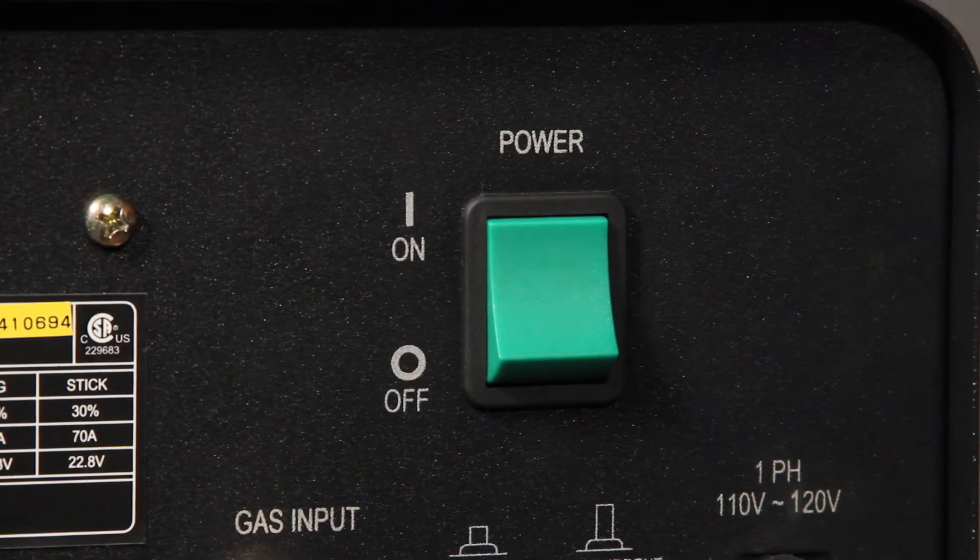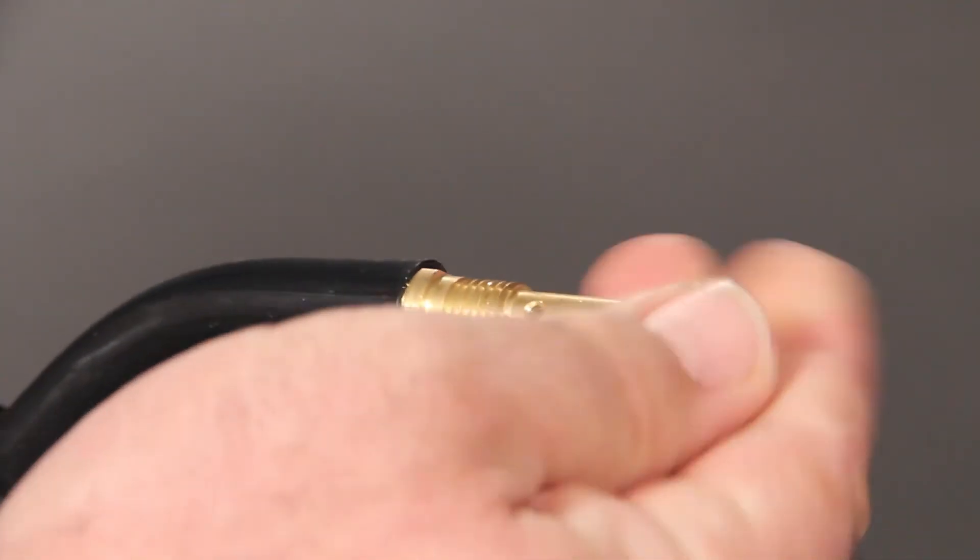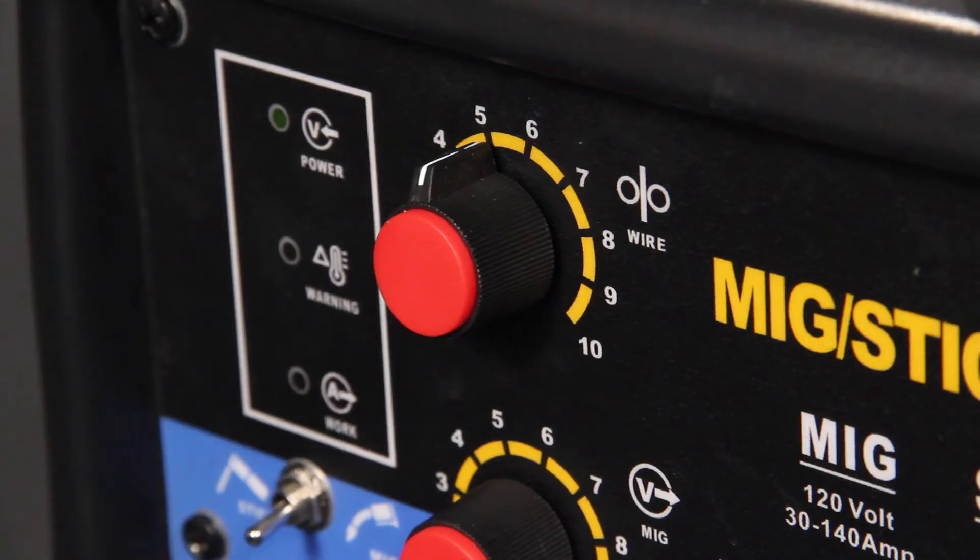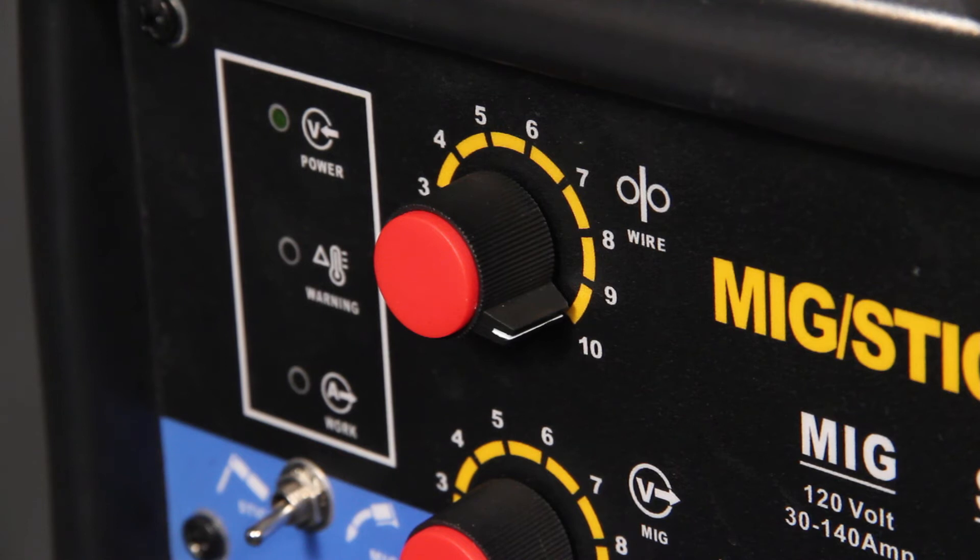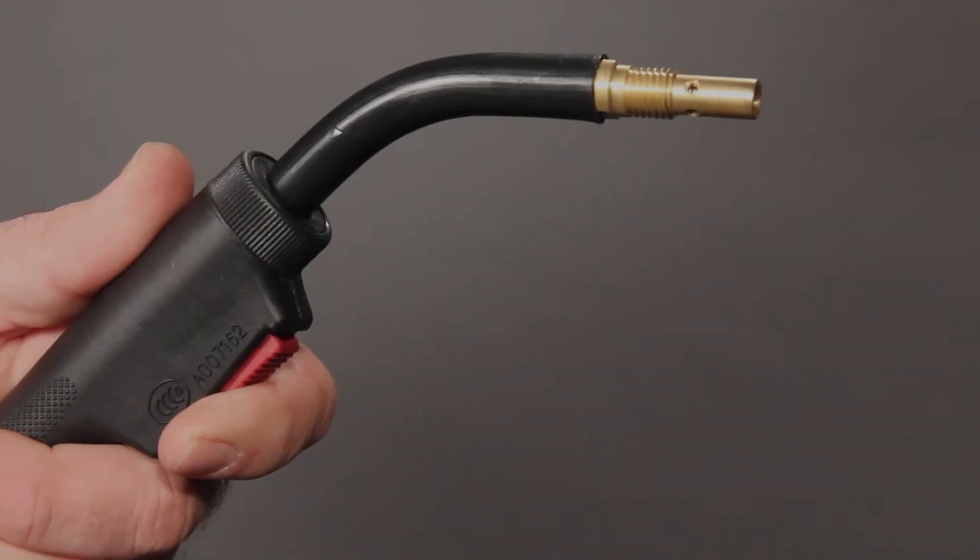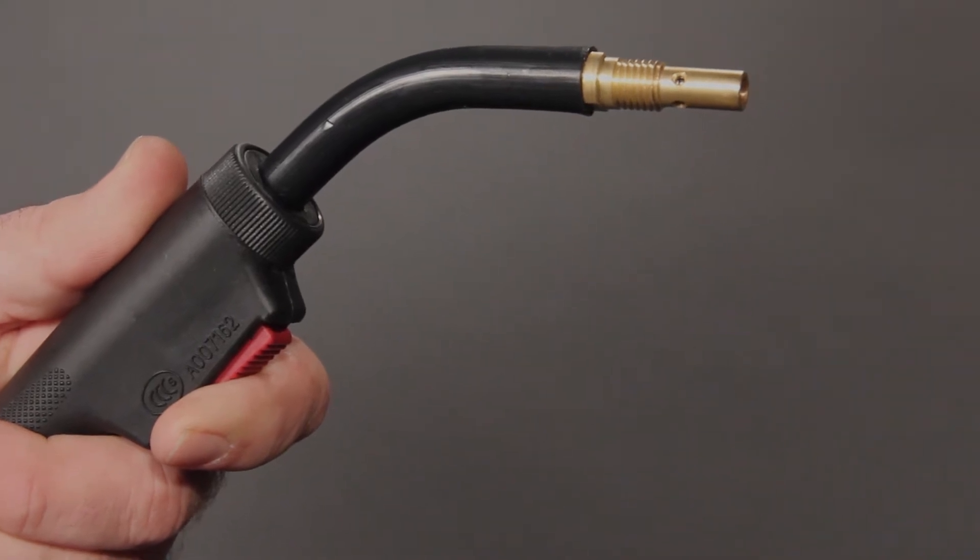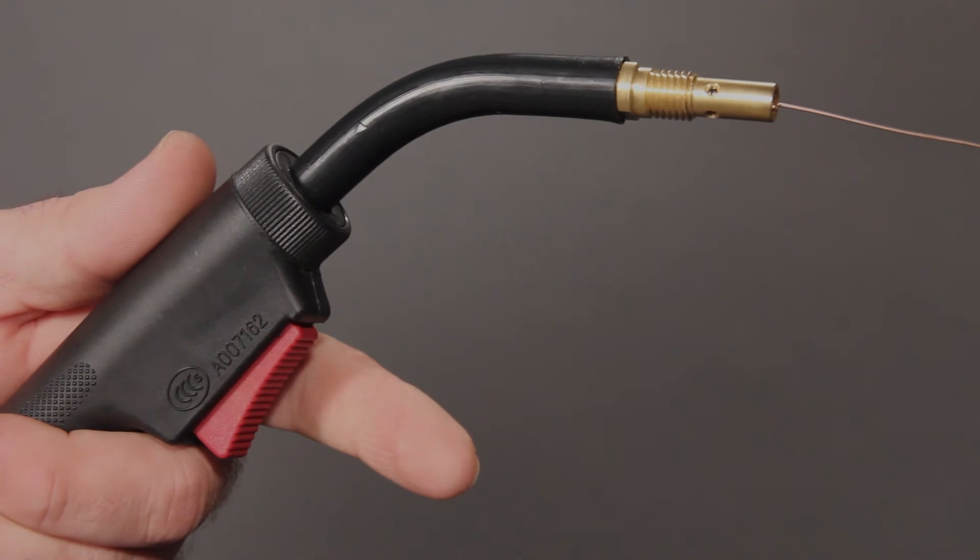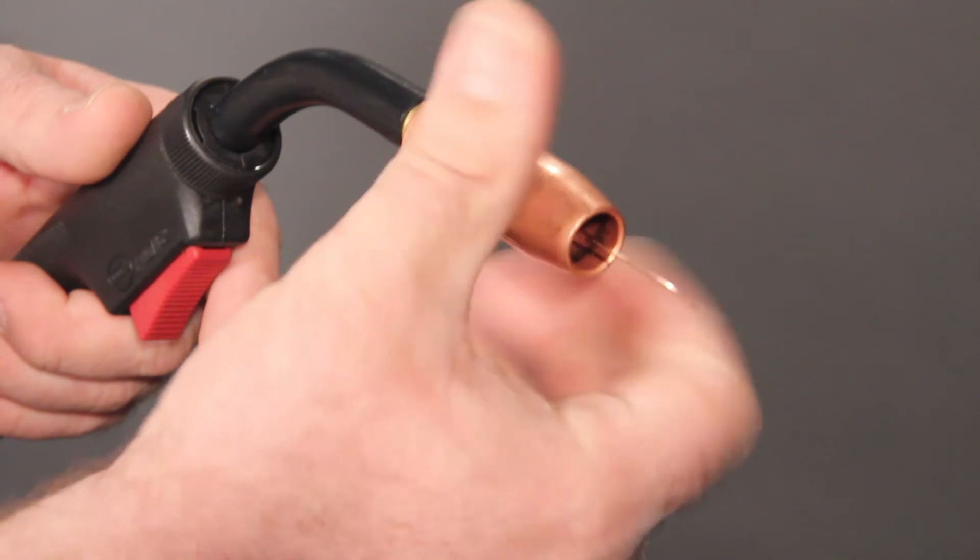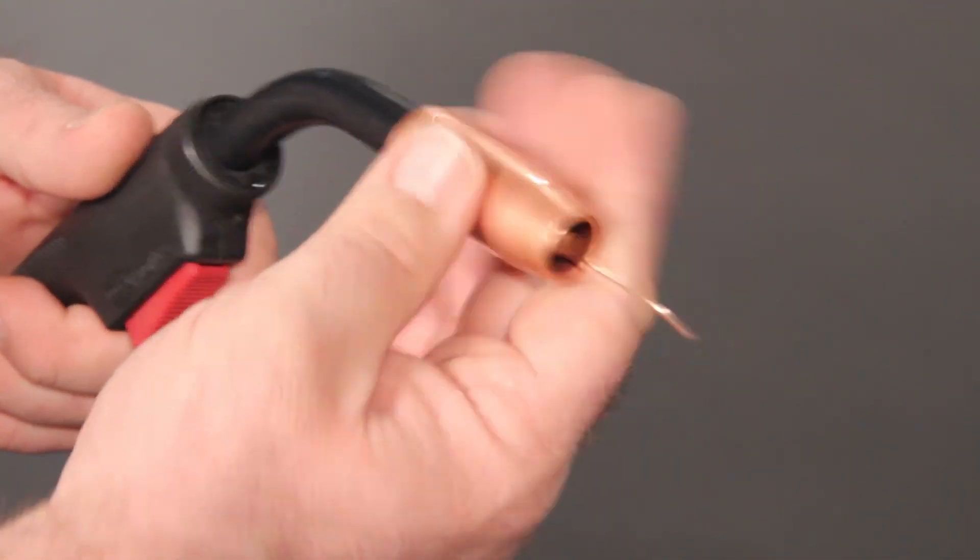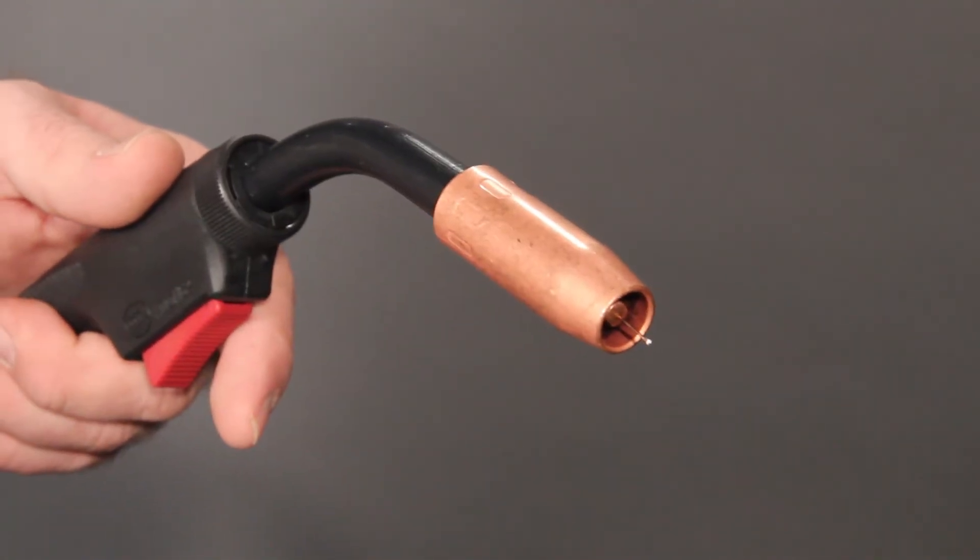Turn the welder input power on. Remove the nozzle and the contact tip from the end of the MIG gun. Turn the wire feed speed on the front of your machine all the way up. Stretch out the gun and press and hold the trigger while watching for the wire to exit the end of the MIG gun. When the wire exits, release the trigger. Reinstall the contact tip and then the nozzle. Trim the wire to length. Your wire is now installed.